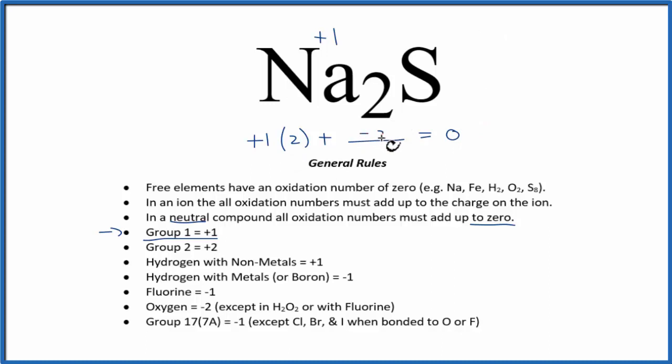So we have to have a minus 2 as the oxidation number for the sulfur here for everything to add up to zero.